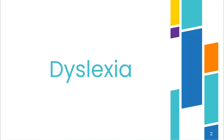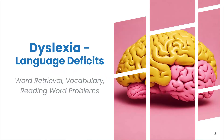Let's start out with dyslexia. Dyslexia is a neurodevelopmental condition that affects a student's ability to read, write, and spell. We often see language deficits like struggling to find the right word, understanding vocabulary, and reading word problems.